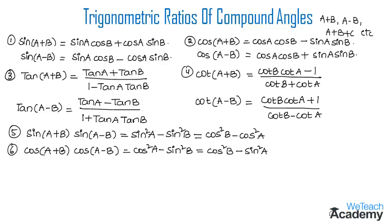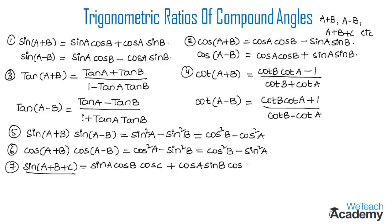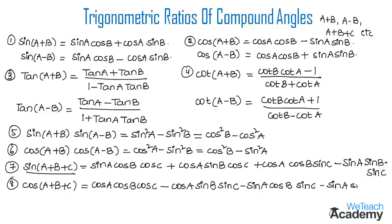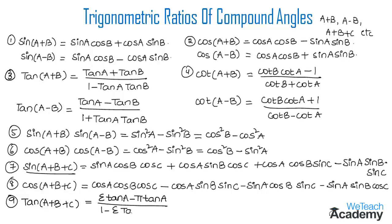Now let us discuss the formulas for the compound angle A plus B plus C. sin(A+B+C) is given by: sin A cos B cos C plus cos A sin B cos C plus cos A cos B sin C minus sin A sin B sin C. And cos(A+B+C) is equal to cos A cos B cos C minus sin A sin B cos C minus sin A cos B sin C minus cos A sin B sin C. And tan(A+B+C) is equal to sigma tan A minus pi tan A, divided by 1 minus sigma tan A tan B.